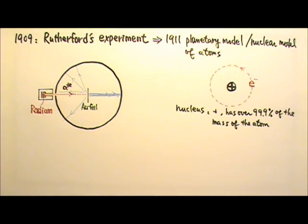So Rutherford said that an atom has a nucleus, and the nucleus is positive and has over 99.9% of the mass of that atom, and the atom is mostly empty space, with the electrons orbit around the nucleus.